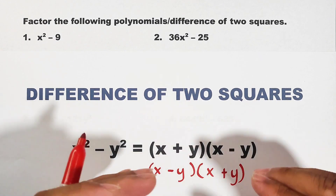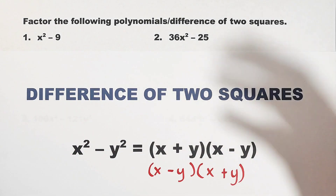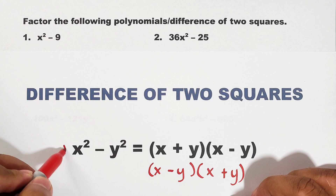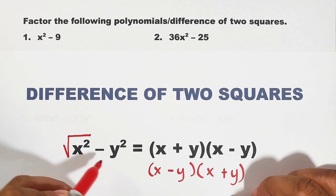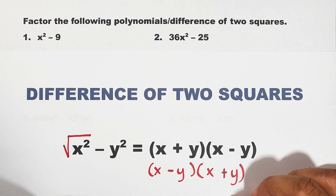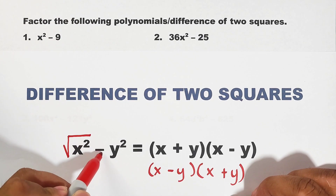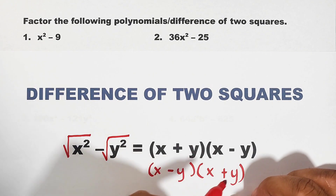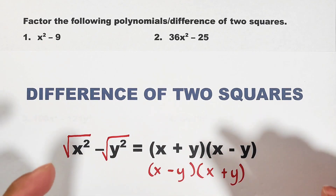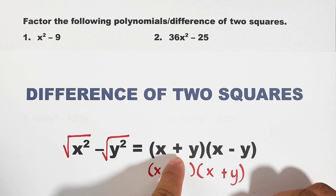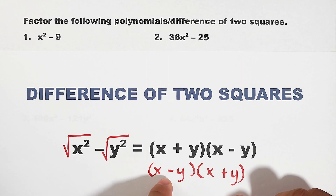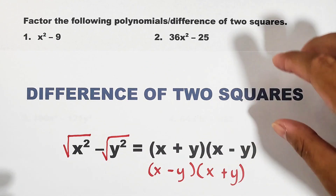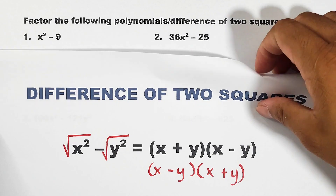You can also write this as x minus y times x plus y — either of the two forms is acceptable. How do we get the factors? First, take the square root of x squared, which is x. The square root of the second term y squared is y. Then your two factors in the middle have one plus and one minus.